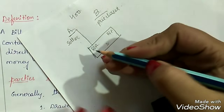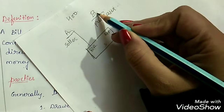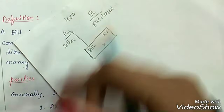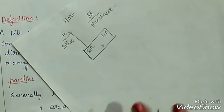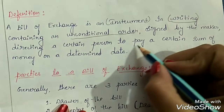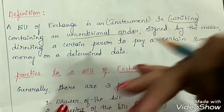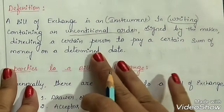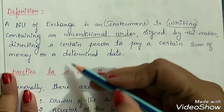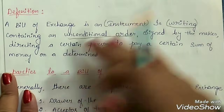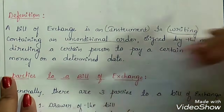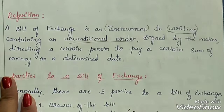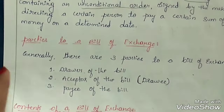It must be signed by the maker — here A is the maker — but it should also be signed by B when he agrees to pay. If B makes his signature, it means he is agreeing to pay. Next, directing a certain person to pay — A is directing B to pay a certain amount on the fixed date. So this is the definition of bills of exchange.